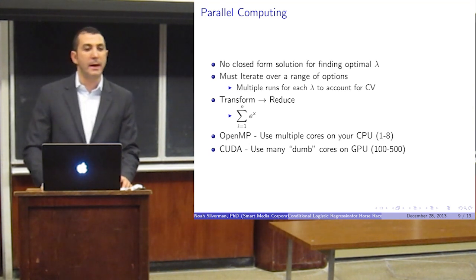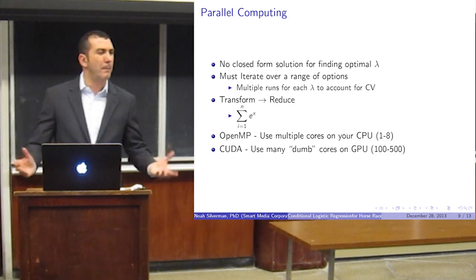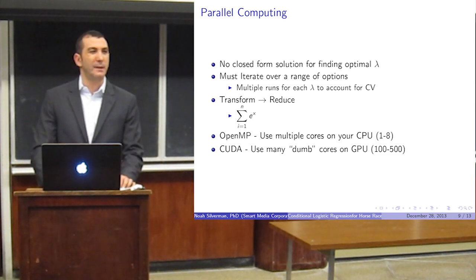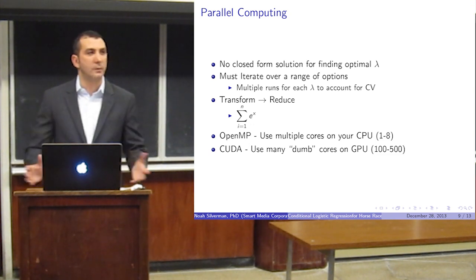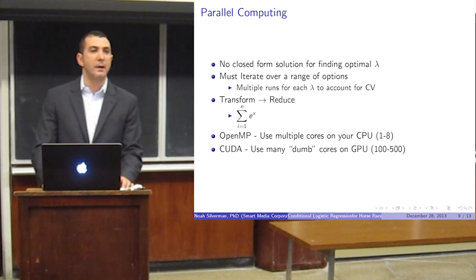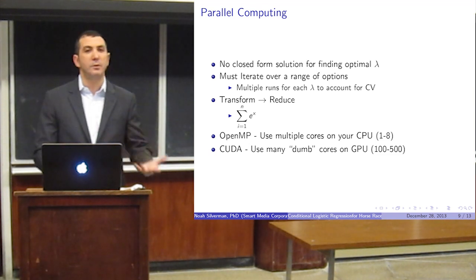One round of coordinate descent can take, I think on my desktop Mac, it took six hours or eight hours. So now if I want to test 50 values of lambda, I'm looking at hundreds of hours of computing time, and what if I want to change the model and do it? It's just not practical.